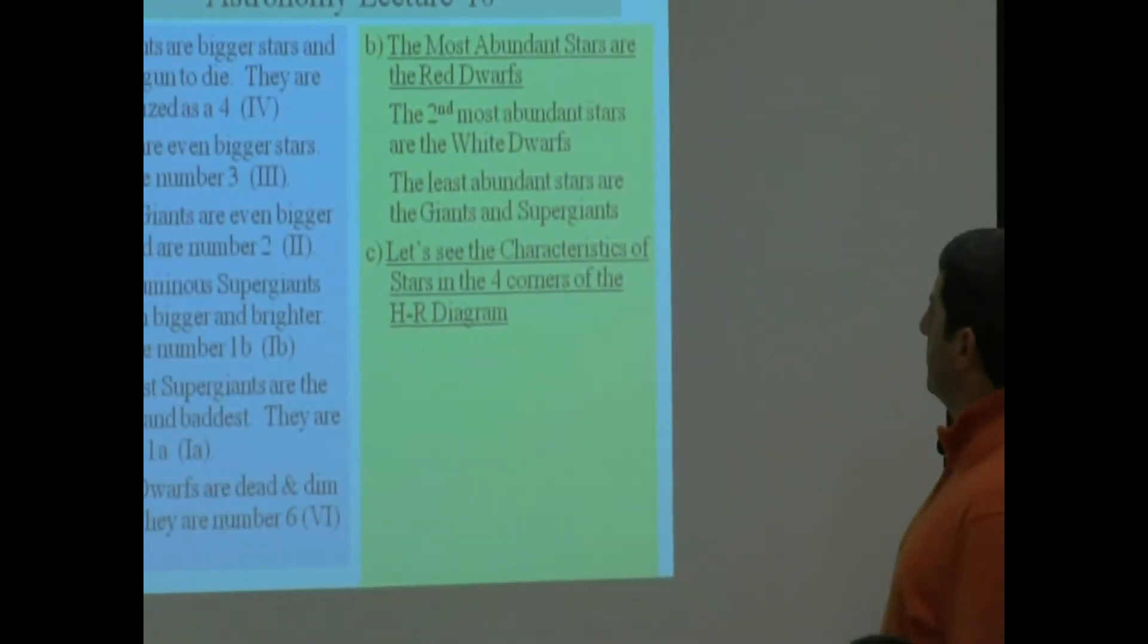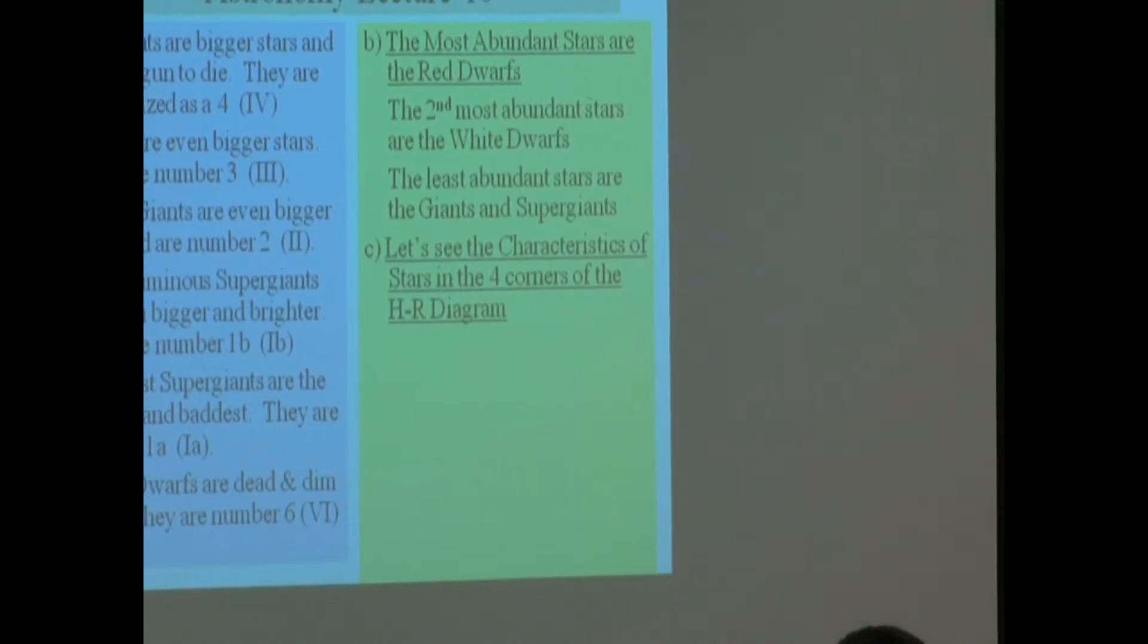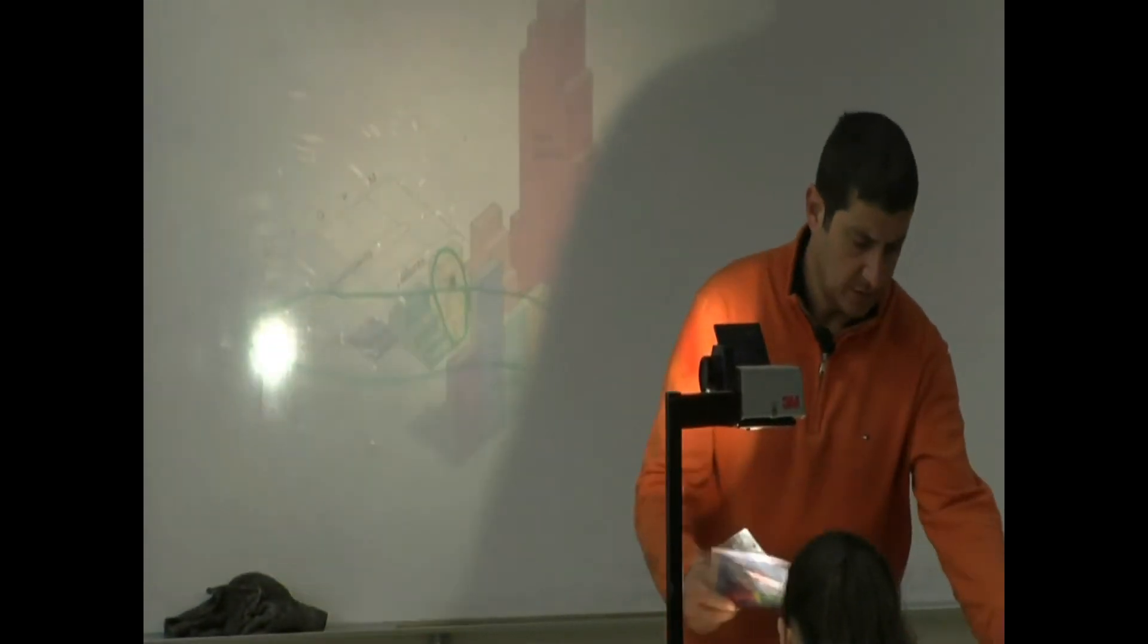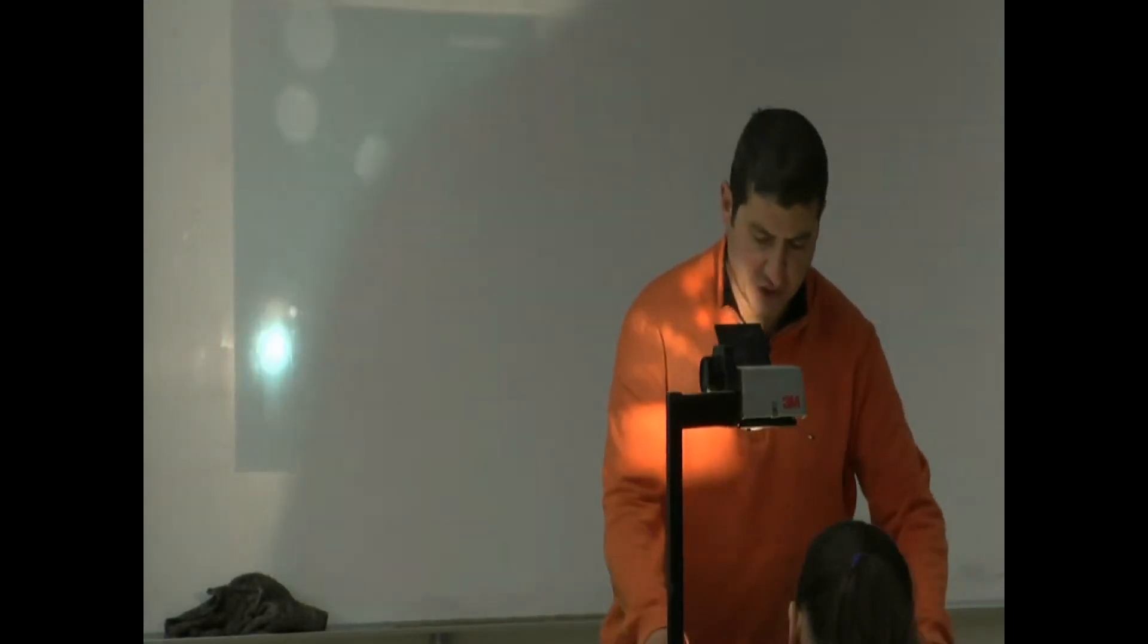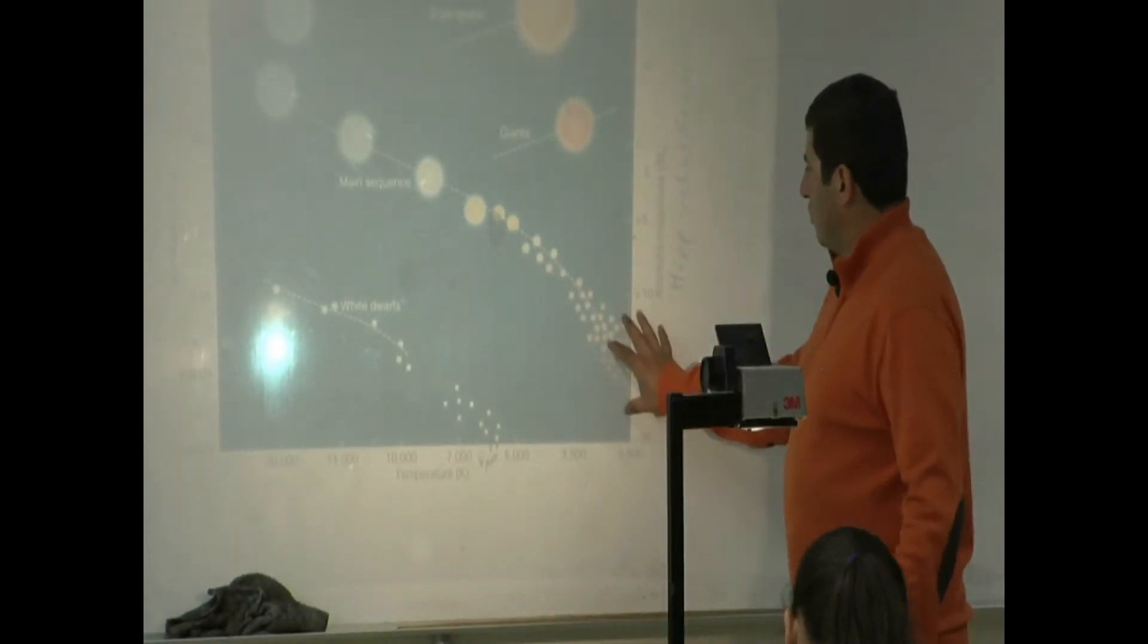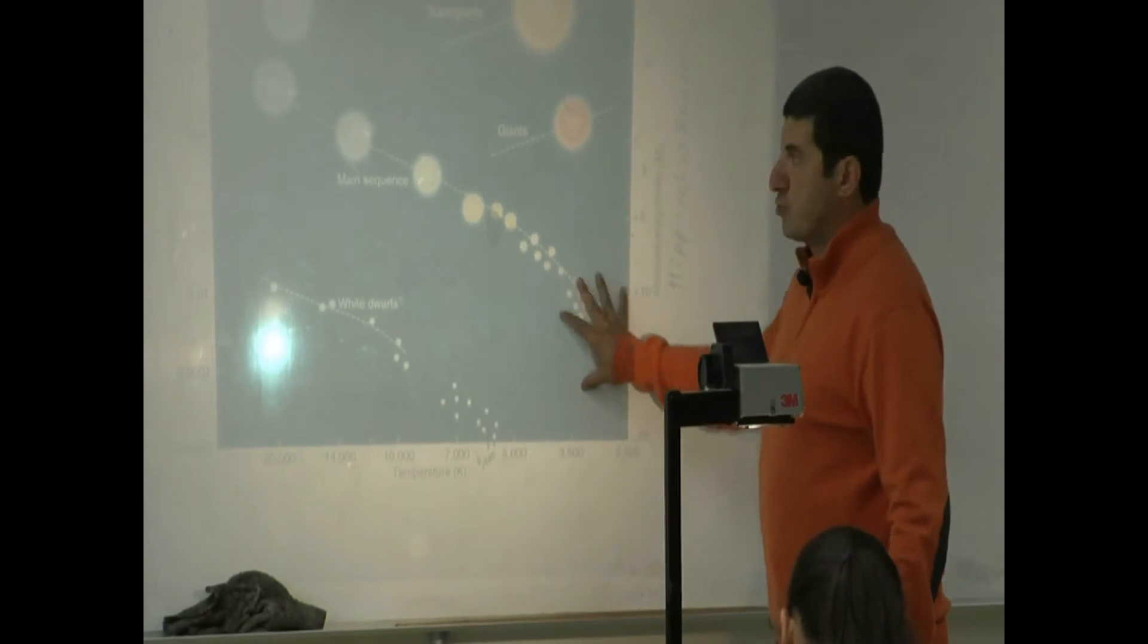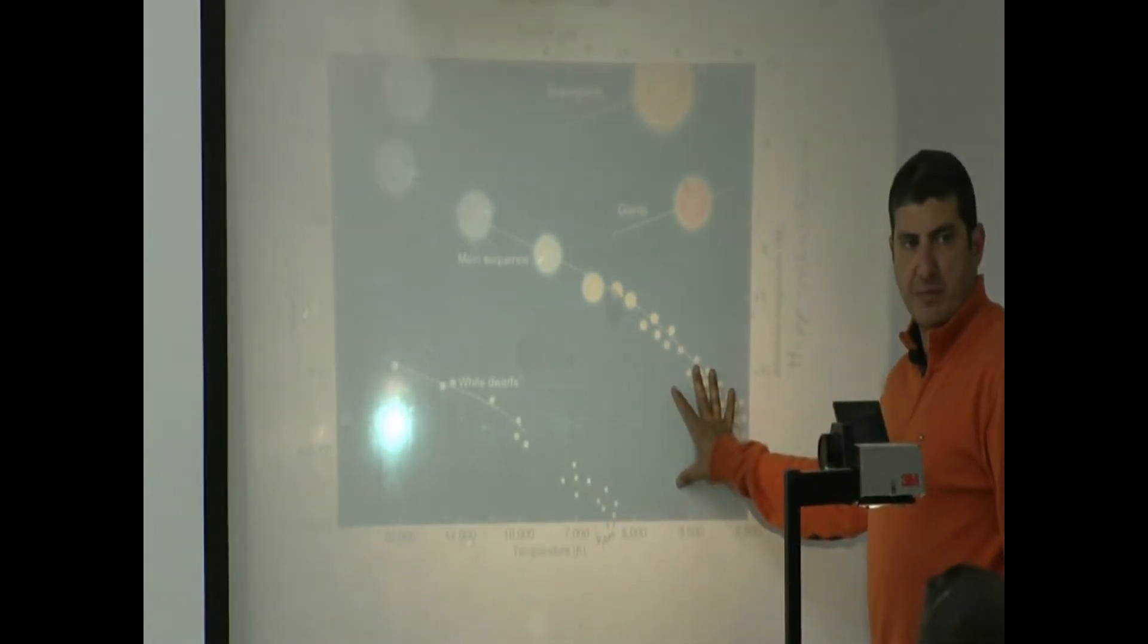Okay, let's see the characteristics of stars in the four corners of the HR diagram. If we go back to the HR diagram, I'll put any one of these versions up. If I were to ask you, what would we expect the characteristics of the lower right corner star would be? Would they be hot or would they be cold?